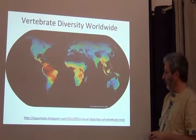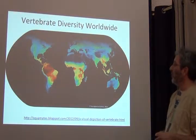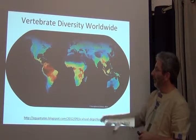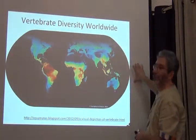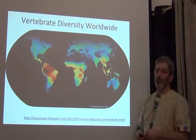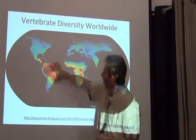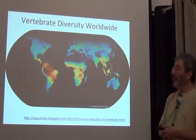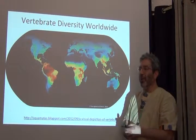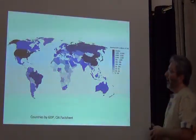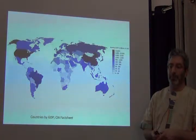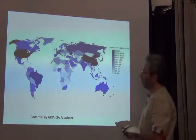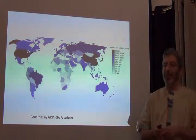Here's a picture of vertebrate diversity worldwide. You see what you pretty much knew: this band of diversity that goes across tropical latitudes. There's some really interesting things — notice that it kind of bends upward. This is the whole science of macroecology: what drives diversity. And then this is a view of the world by GDP — gross domestic product — essentially a view of the world in terms of economic activity.